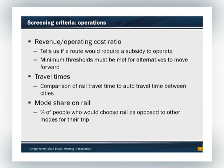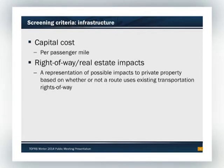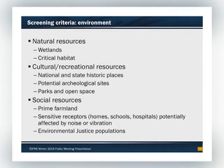These are some of the criteria we looked at. We looked at the cost-revenue ratio — how much of a subsidy a particular service would need — and developed minimum thresholds for those criteria. We also looked at travel times compared to the automobile, and how many people would choose to use this service if it were available. We looked at capital costs and passenger rail cost per mile. Then, regarding right-of-way, we assessed whether routes would be on existing freight lines or require a new alignment. We also evaluated natural resources, cultural resources, archaeological sites, and social resources including farmland, noise receptors, and environmental justice populations.